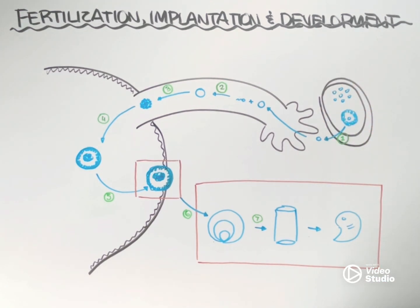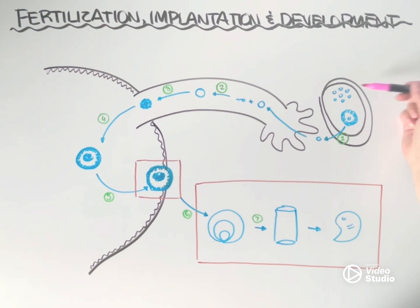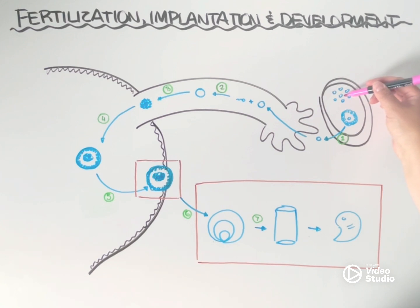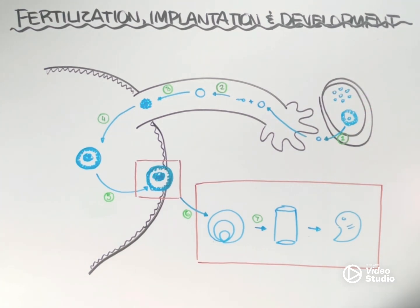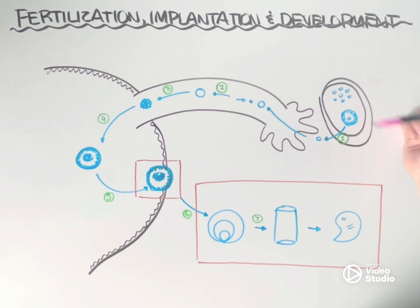This is where we see the female gamete, otherwise known as eggs. What sets gametes apart from other cells in the body is that they are haploid cells — they only contain half the chromosomes required to survive. Before anything can happen in terms of reproduction, we need to get one of those eggs out of the ovaries, and that is part of the role of the menstrual cycle in women.